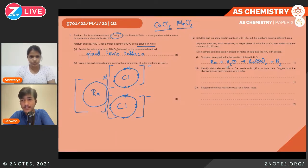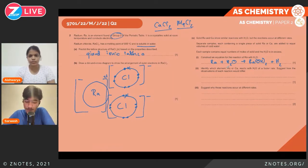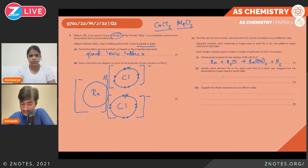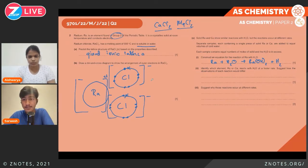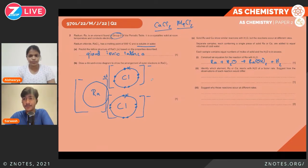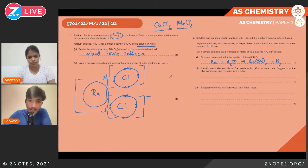Radium reacts with water at a faster rate compared to calcium. This is because radium is lower in the periodic table than calcium, meaning radium can lose its electrons more easily. Radium has a lower ionization energy and more shielding effect, because of which it can ionize more easily to form a new compound.